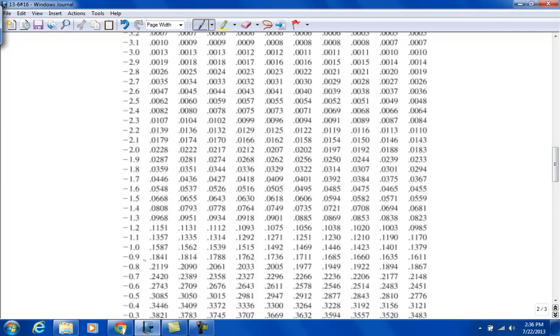So let's look for negative 0.96. So that's 0, 1, 2, 3, 4, 5, 6. So 0.1685.